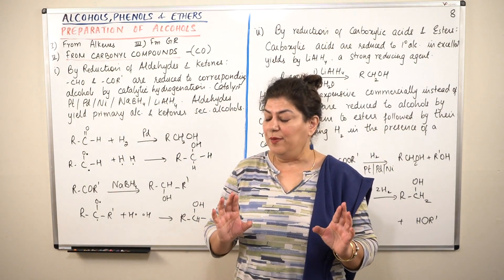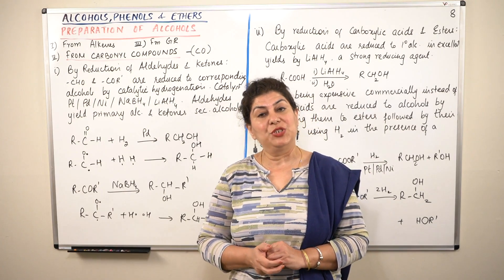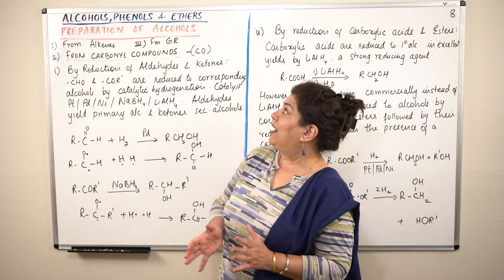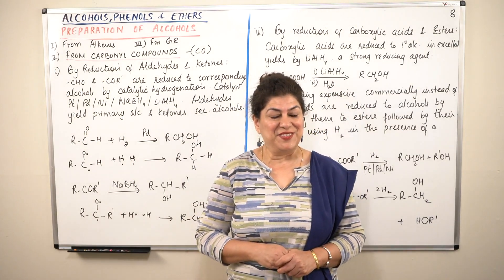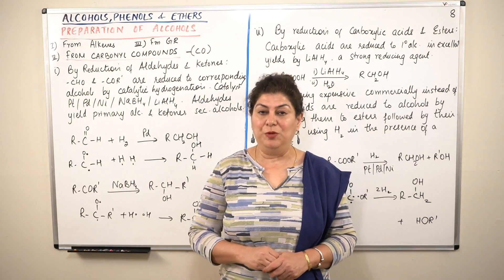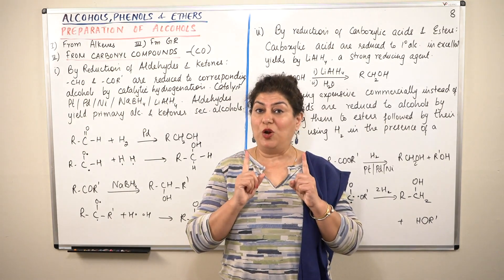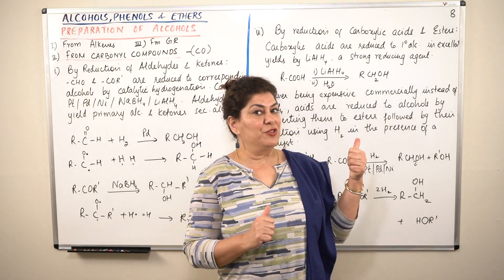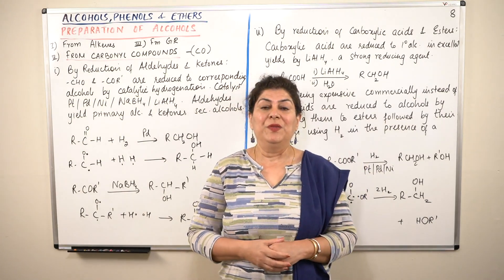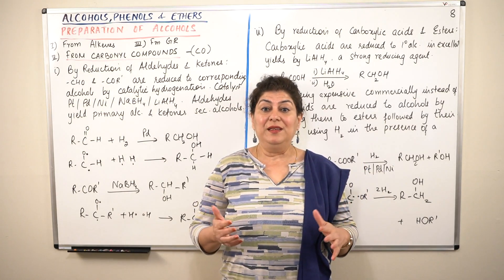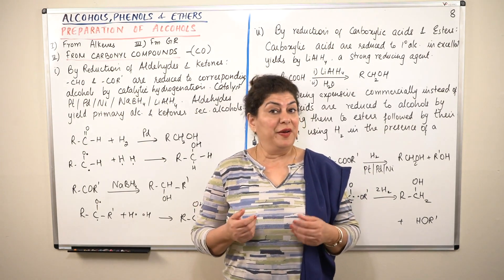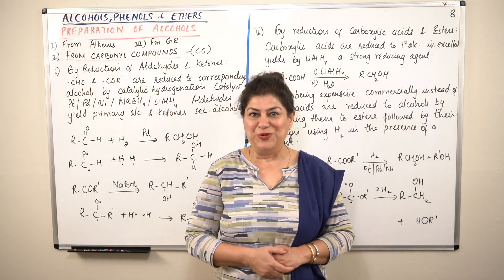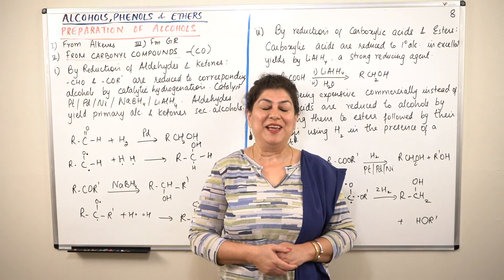So these were the methods of preparation of alcohols from carbonyl compounds. With this I will end this video and in the next video we will continue with the preparation of alcohols from Grignard reagents. If you found this video helpful please give it a thumbs up, click the link for other videos of this chapter, subscribe to my channel, recommend it to your friends, and keep returning for more videos on chemistry. Thank you for watching, bye bye for now.